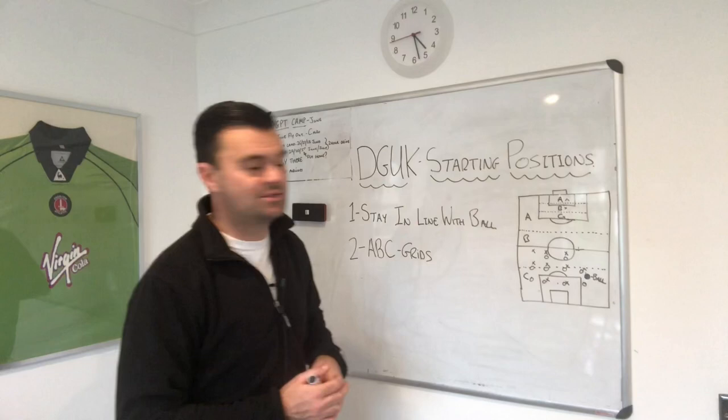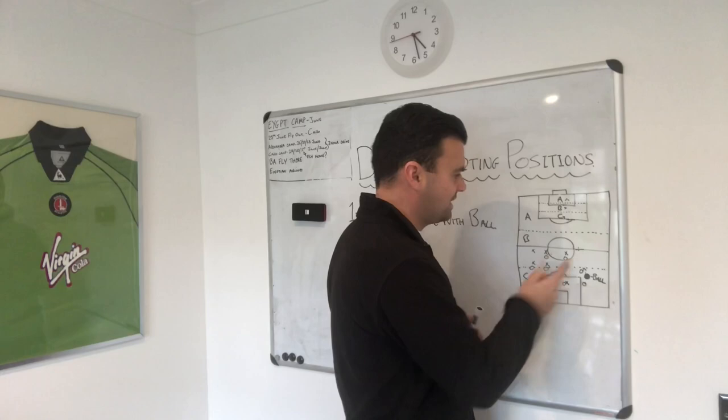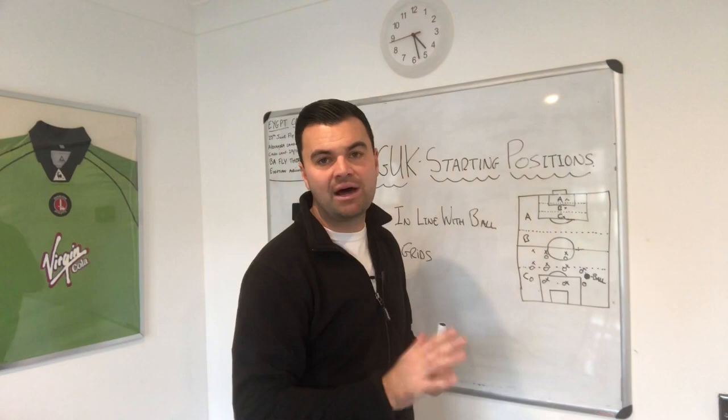Step two, we're going to look at A, B and C grids. So let me explain this. On the pitch we've got three sections: A, B and C. In the 18-yard box we've also got the same A, B and C.